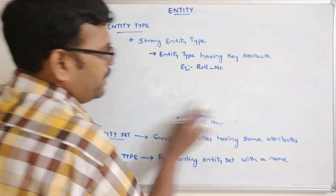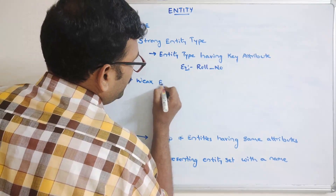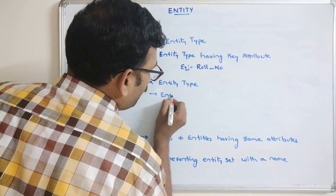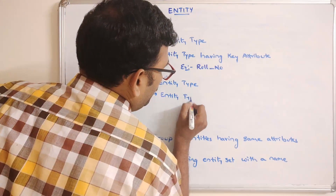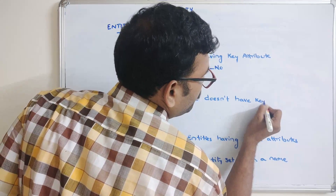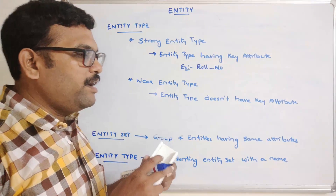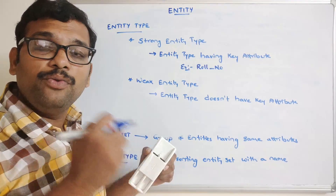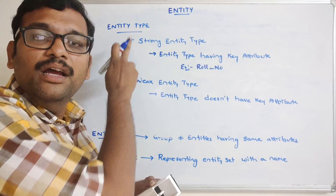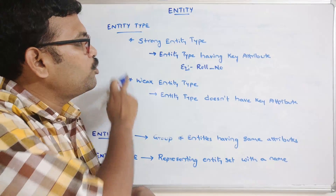The next one is a weak entity type. In this type, the entity type doesn't have a key attribute — meaning there is no unique identifier for the records. Such entity types are called weak entity types. This weak entity will take the help of a strong entity to identify its rows or records.